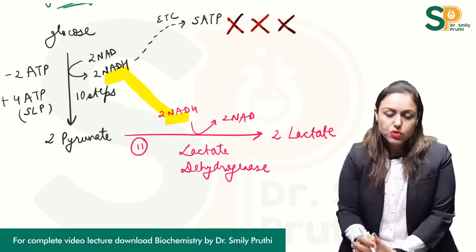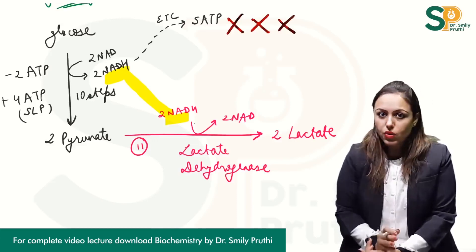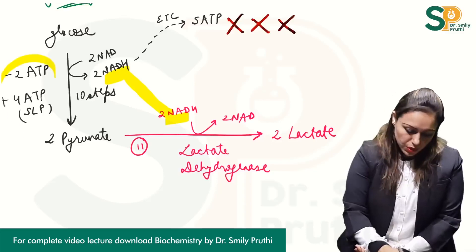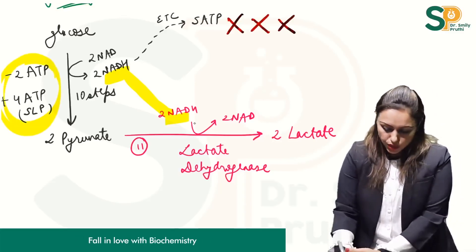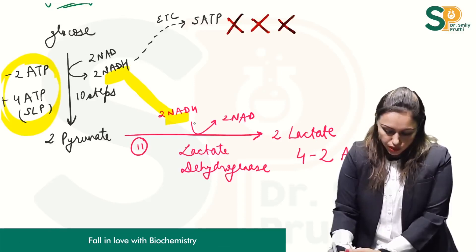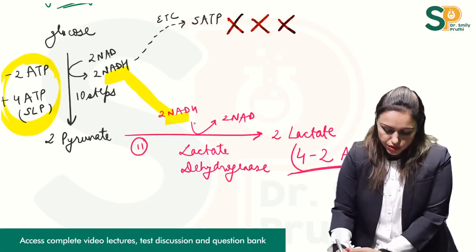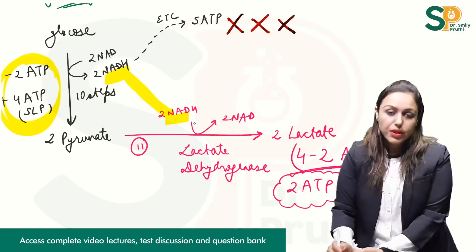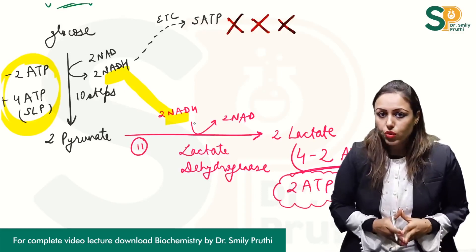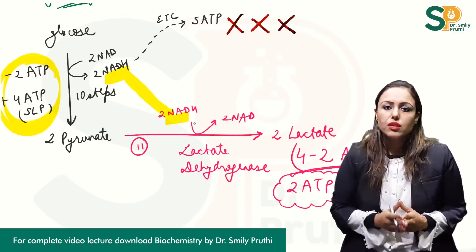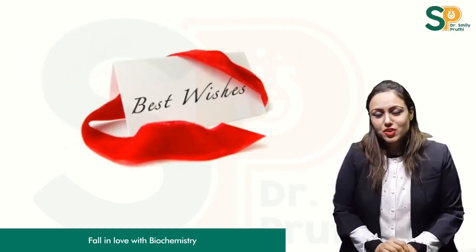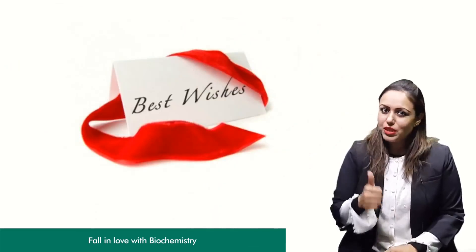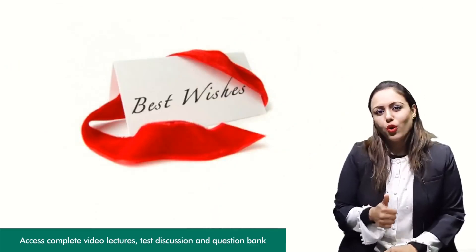So the energetics in case of anaerobic glycolysis will be only 4 minus 2 ATPs, which equals 2 ATPs in case of anaerobic glycolysis. And as I already told you, 7 ATPs in case of aerobic glycolysis. This is it with this topic — thanks for watching and best wishes to you for all of your exams.